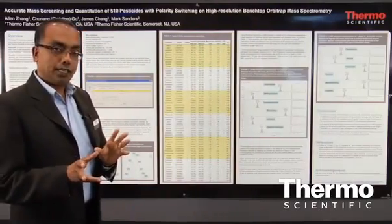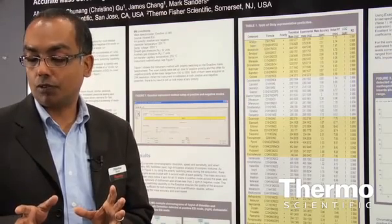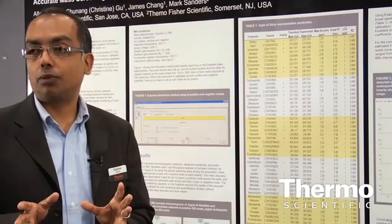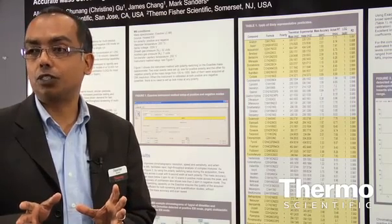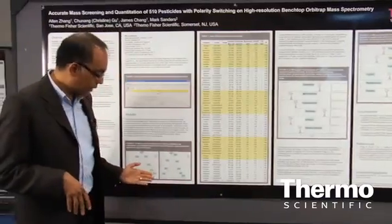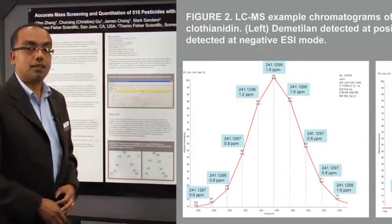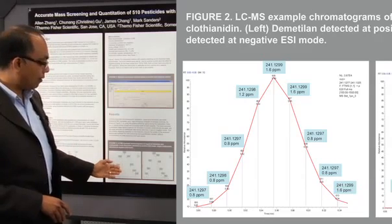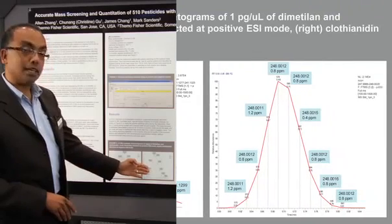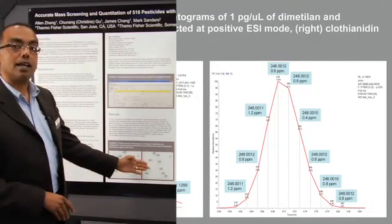Some compounds ionize better in positive and some in negative. Therefore, it is essential for the instrument to be able to do fast polarity switching between positive and negative modes. This graph shows an example of this: the Exactive is able to switch between positive and negative polarities very rapidly. On the left we have a compound being detected in positive, and on the right, in the same scan, we have another pesticide being detected in negative electrospray mode.